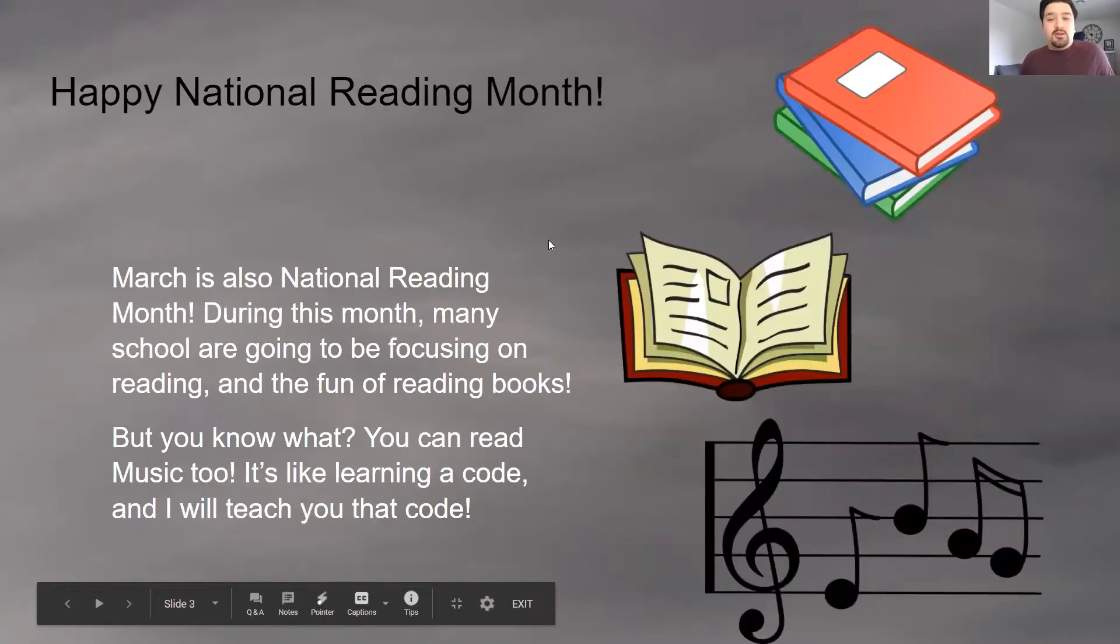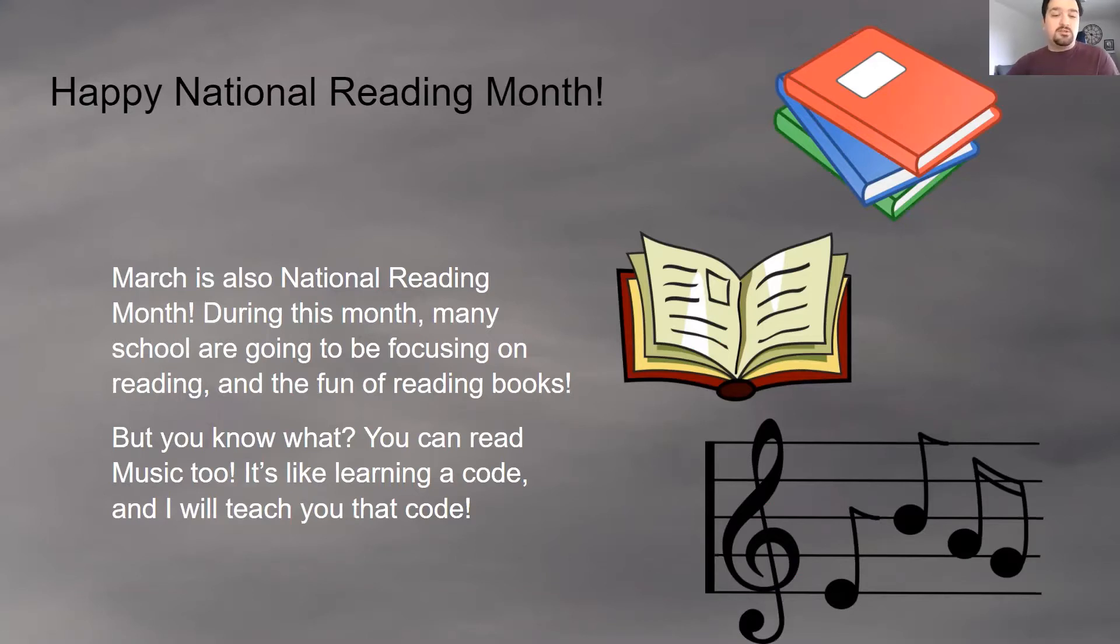Also, March is National Reading Month. Look at that. There's a lot of things going on in March. March is busy. So March is also National Reading Month. During this month, many schools are going to be focusing on reading and the fun of reading books. But you know what? You can read music too. It's like learning the code and I'm going to teach you that code. So when you read a book, everybody knows the alphabet. They know the letters A, B, C, D, all the way through Z. And they know that if we take some of them and we mix them up and we put them in different orders, they make different sounds. And then when we take those sounds and squish them together, they make different words. So when you read on a page, you know what the letters are and you know what the sounds are. You can look at a word and say the word. You are reading the book.